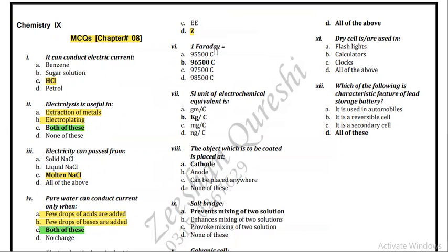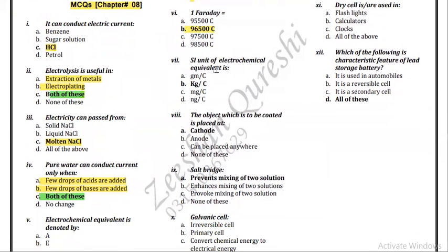One Faraday is equal to how many coulombs? So 96,500 coulombs is equal to one Faraday. Now, as a unit of electrochemical equivalent, electrochemical equivalent is a unit of kilogram per coulomb.